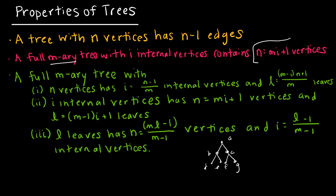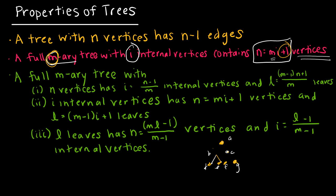Here's a relationship for full M-ary trees: to find the total number of vertices n, take the number of internal vertices i, multiply by m (the number of children each internal vertex has), and add one: n = mi + 1. For example, with three internal vertices in a binary tree, 3 × 2 = 6, and there are 7 total vertices, which is where the plus one comes in.